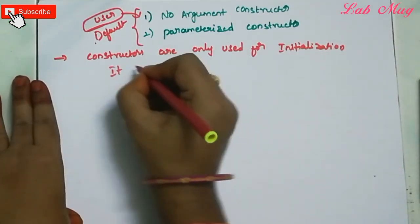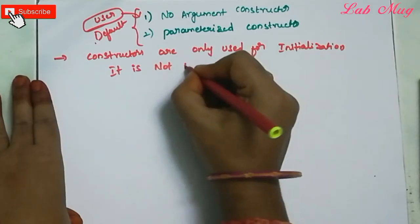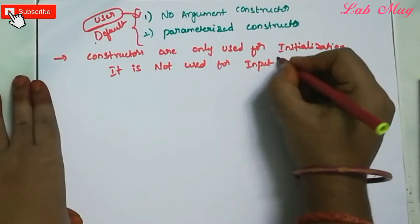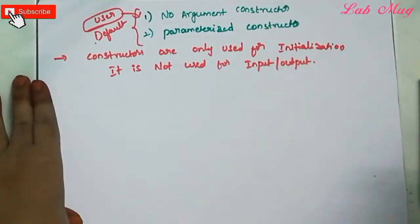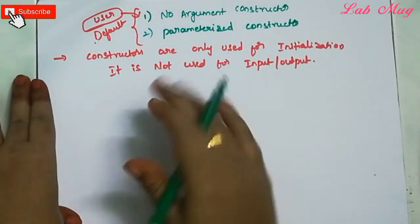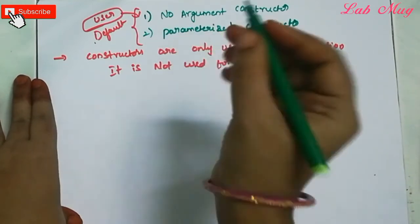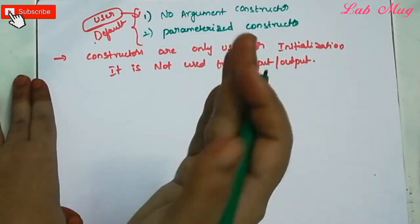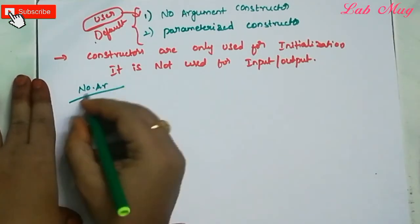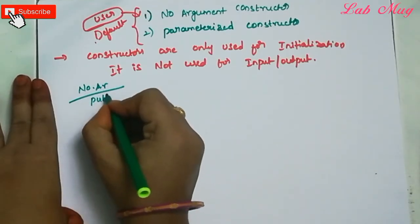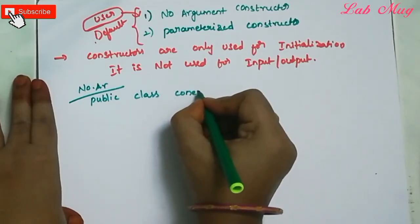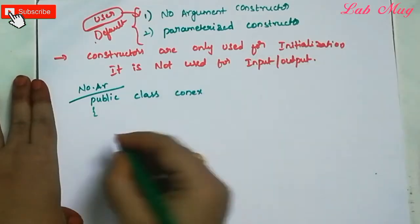Constructors are not used for input and output operations — only for initialization of variables and their values. Now let's look at the first example: the No Argument constructor. For example, public class ConstructorExample — opening brace.